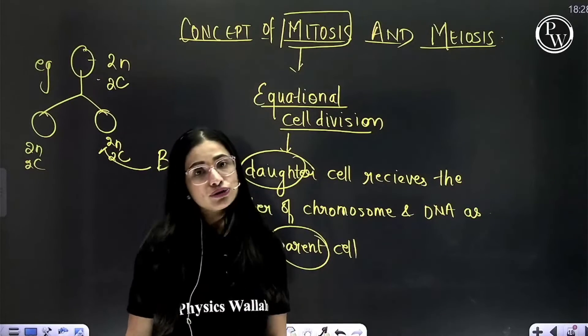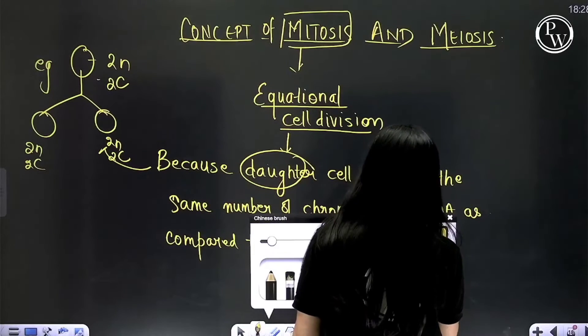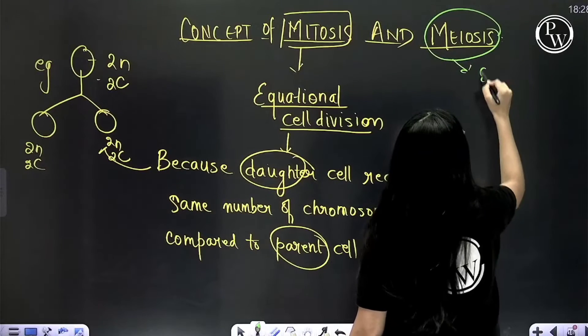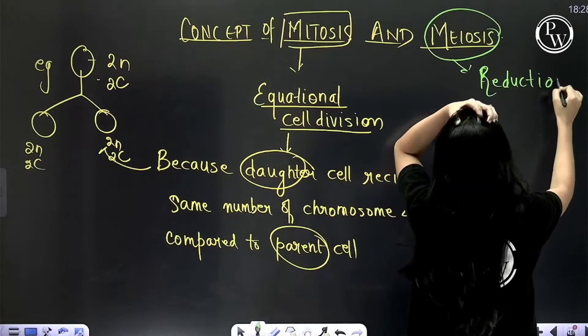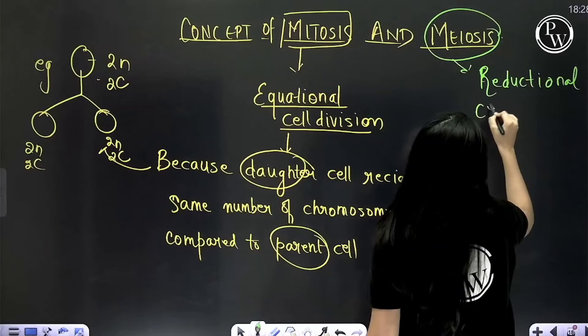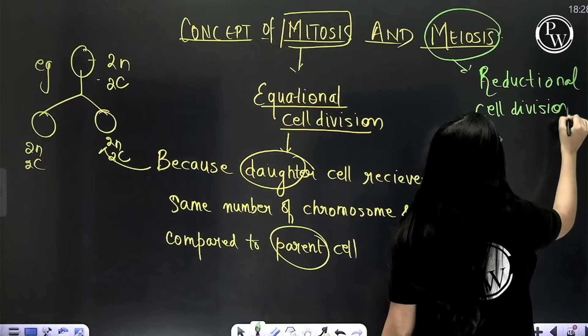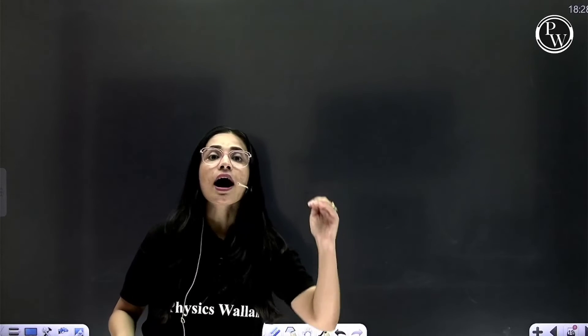Second is meiosis. Unlike that of mitosis, meiosis is known as reductional cell division. And why is it known as reductional cell division? Reduction means half.